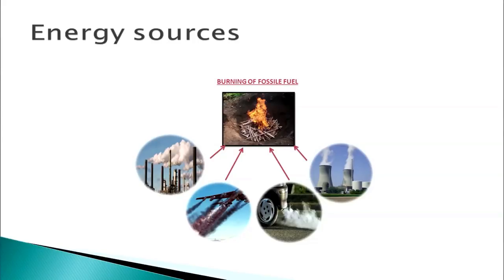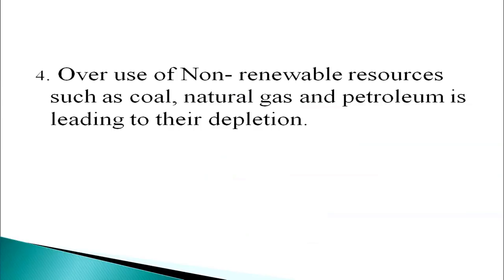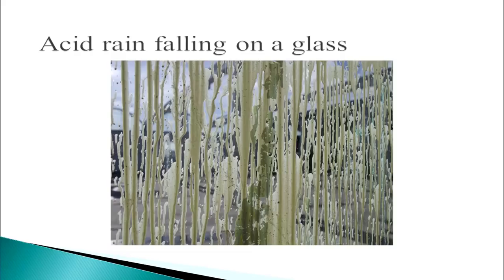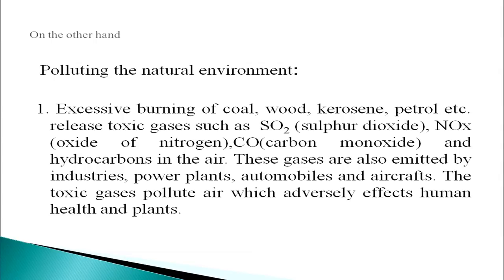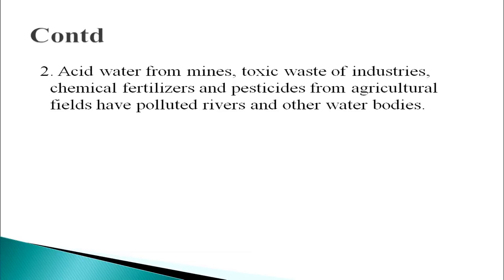Now we come to energy sources. Overuse of non-renewable resources such as coal, natural gas and petroleum is leading to their depletion. On the other hand, polluting the natural environment: excessive burning of coal, wood, kerosene, petrol etc. releases toxic gases such as sulfur dioxide, oxides of nitrogen, carbon monoxide and hydrocarbons into the air. These gases are also emitted by industries, power plants, automobiles and aircraft. The toxic gases pollute air which adversely affects human health and plants. Acid water from mines, toxic waste of industries, chemical fertilizers and pesticides from agricultural fields have polluted rivers and other water bodies.